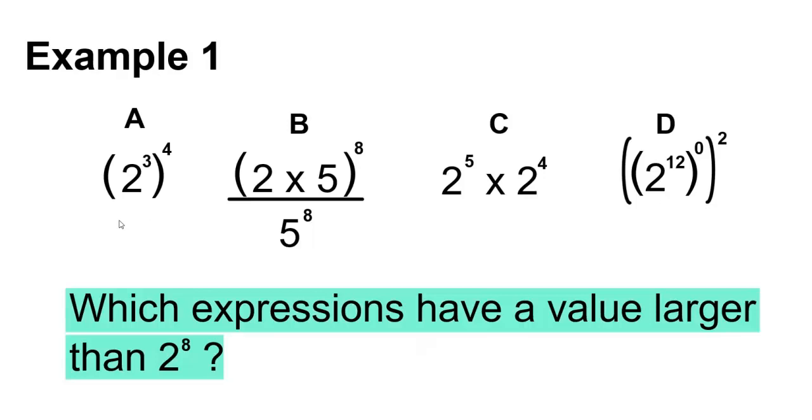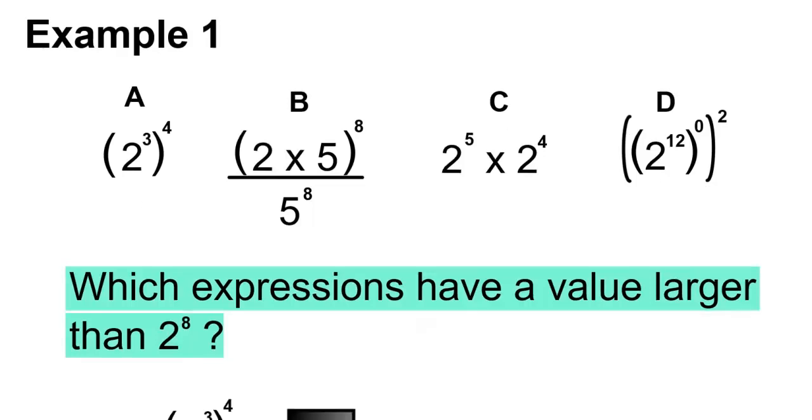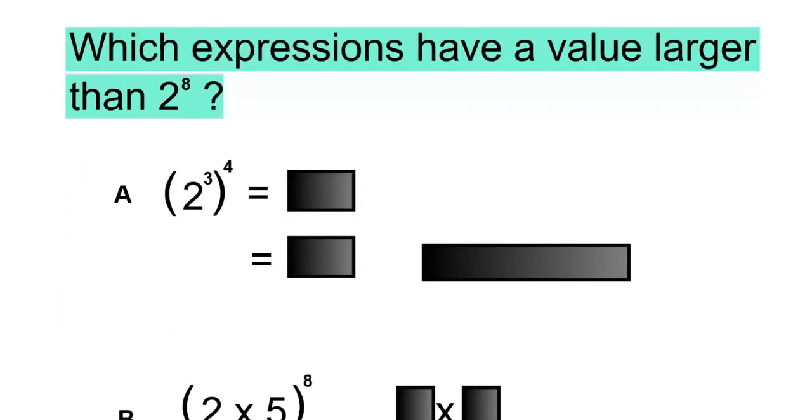We'll start by simplifying A. 2 to the 3 to the 4 is a power of a power, so we'll multiply the exponents. So 2 to the 3 times 4, which is 2 to the 12.